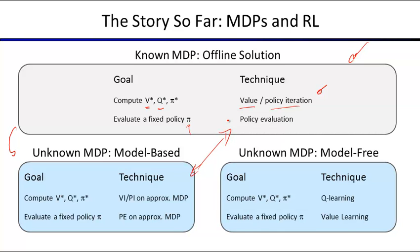We looked at empirical averaging using the example of computing expected age of students. You can either build a model for the distribution over ages and compute the expected value, or directly average the sample values. The same idea applies to learning value functions and Q value functions directly from experience.